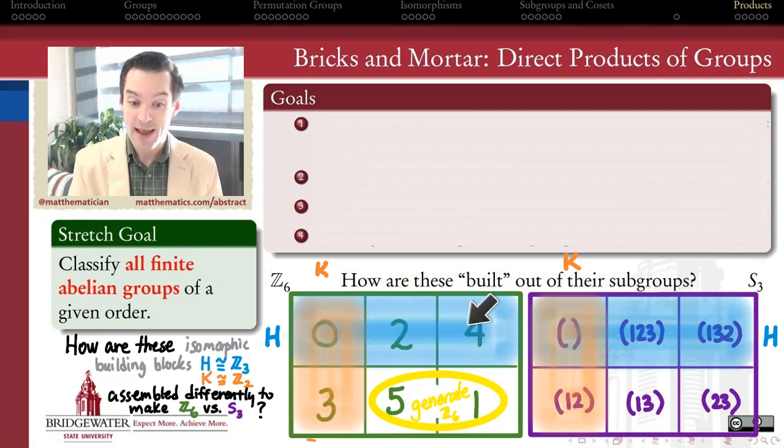For example, how do I get 1? I can add together the 4 that I have from the subgroup H with the 3 that I have from the subgroup K. 4 plus 3 taken mod 6, that's equal to 1.